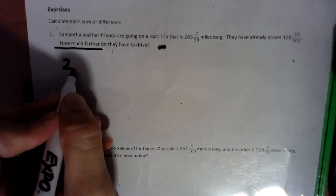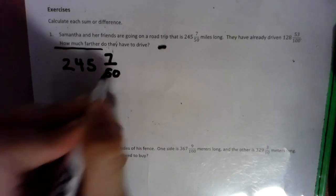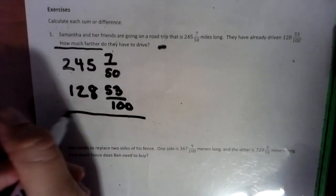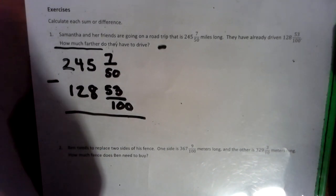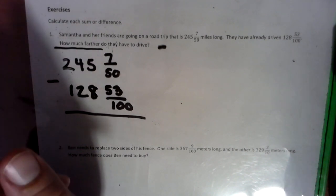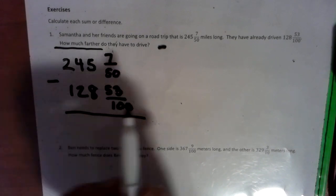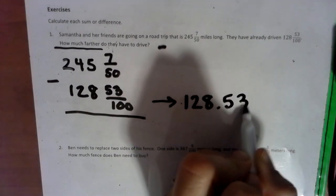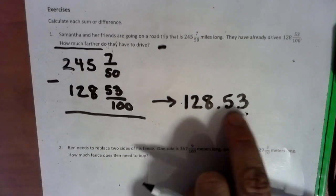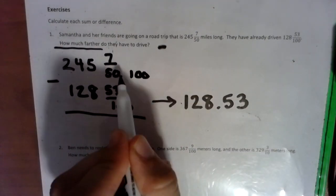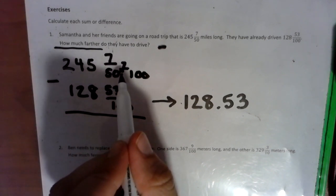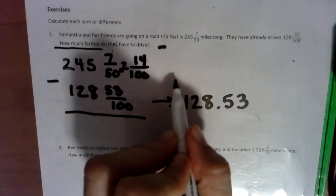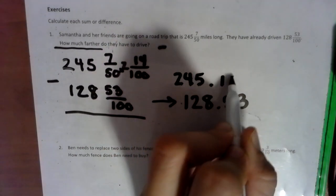So we have 245 and 7/50, and we have 128 and 53/100. Okay, so right away, I'm not 100% in love with fractions. As a math teacher, in my mind, decimals look like money. Money's easy to deal with. So I like to convert this. This right here can be converted to 128 and 53/100 because that's how tenths look. And then 50 can become 100 by multiplying by 2. And whatever we do to the denominator, we do the numerator. So our new numerator would be 14. 7 times 2 is 14.